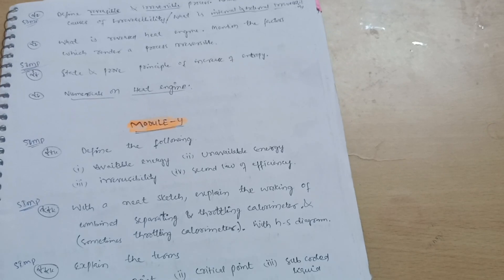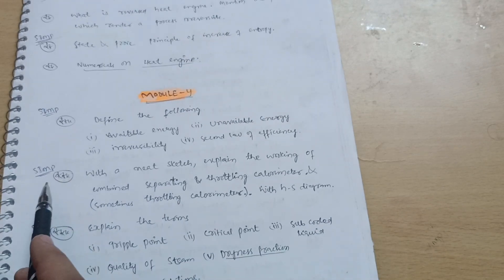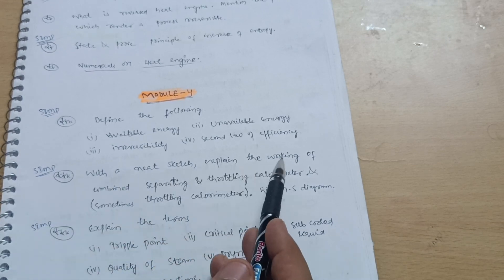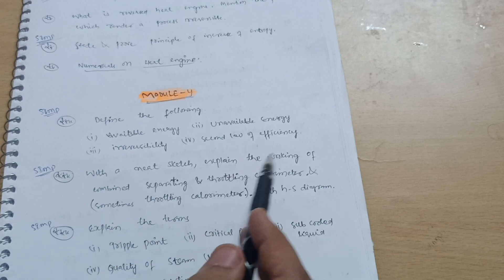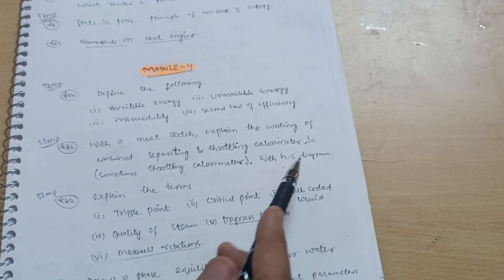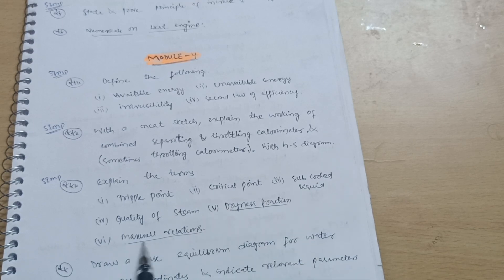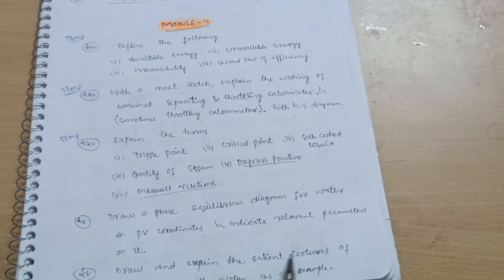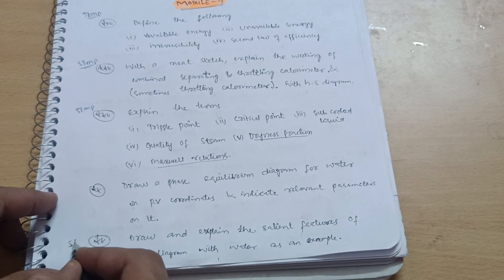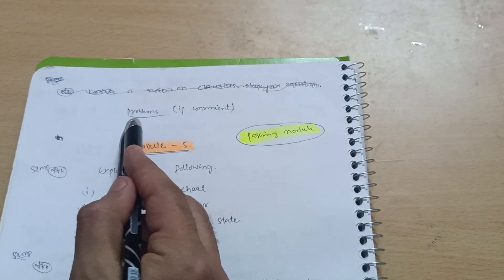In Module 4, cover definitions of available energy, unavailable energy, irreversibility, and second law efficiency. A most important question in the OR part is: with a neat sketch, explain the working of the combined separating and throttling calorimeter. Sometimes they ask only about the throttling calorimeter with the h-s diagram. A super important question: explain the terms triple point, critical point, sub-cooled liquid, quality of steam, dryness fraction, and Maxwell relations. Also draw a phase equilibrium diagram for water on PV coordinates.